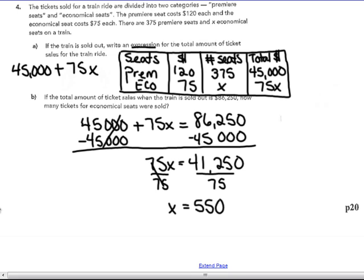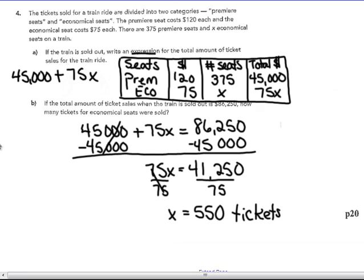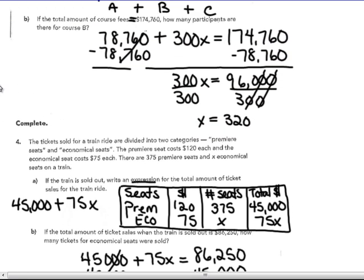Took out a calculator, 550 times 75 is 41,250. So there were 550 tickets sold for the economical seats. I'm not writing out the full sentence answer box label right now just to save time, but we will do that in class. So yes, I did answer. This is the number of tickets. So I guess I'll just label my answers. That was 550 tickets. And in the answer above here, there were 320 participants. We're not writing out the full staple right now just to save time.